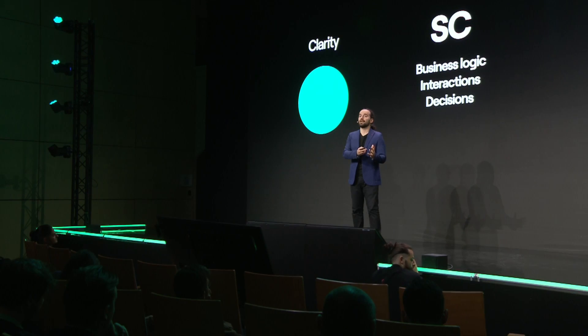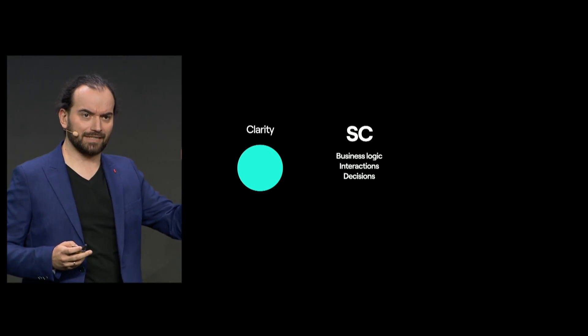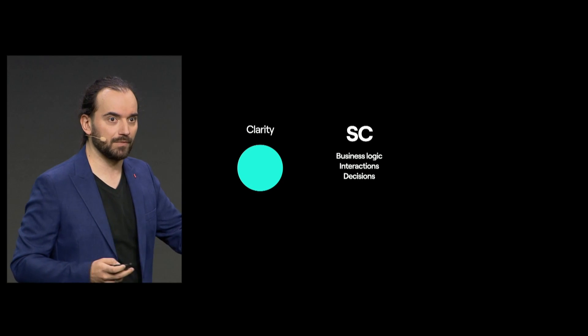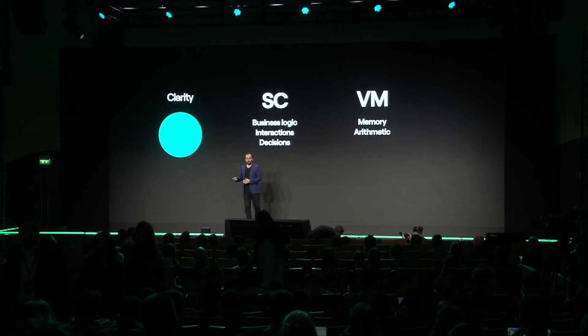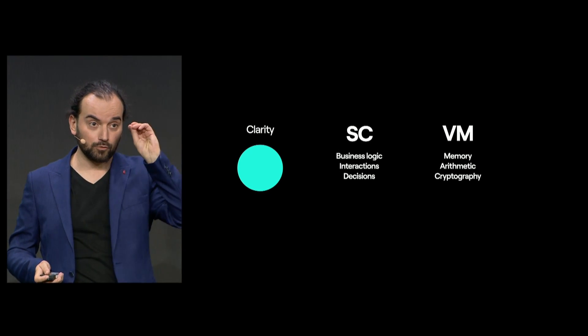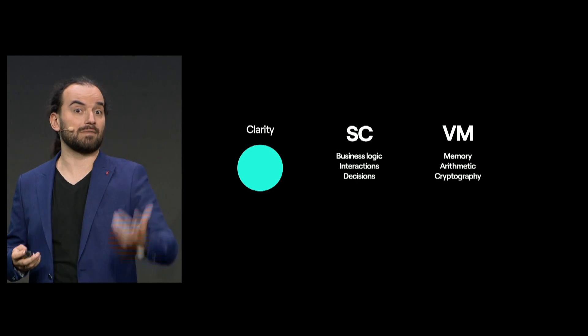Good language is never about the how, it is about the what. It is never about technical details — it is about great ideas being conveyed. We really care a lot about this, and we're taking it to its natural extreme. We've made contracts contain only the absolute necessary to run. A smart contract should contain business logic, interactions, and decisions. Everything else — memory, arithmetic, cryptography — is deferred to the VM, to the environment. So the smart contract has to care about one thing and one thing only. Because smart contracts are so small, you can even read them in assembly, which is amazing.